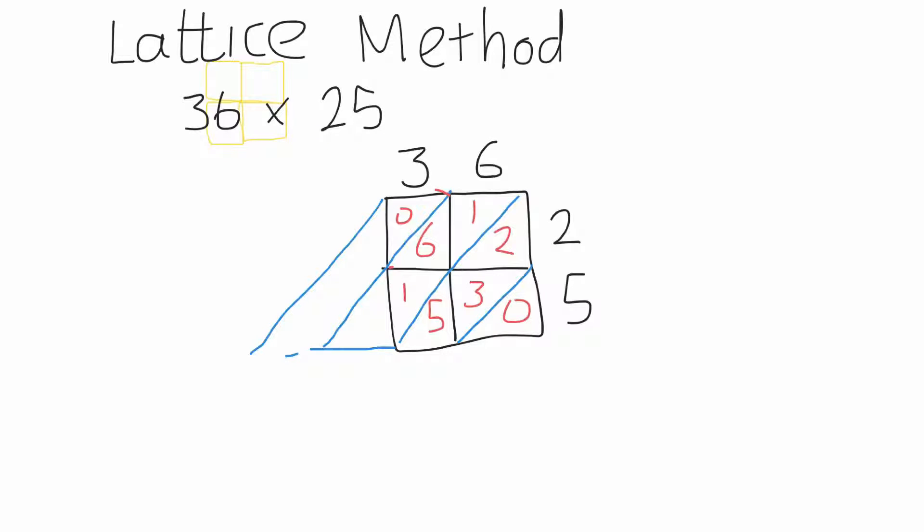And then what we do, we're looking down these diagonals. So the first diagonal down here we've just got 0. Down the next diagonal we've got 10, so 0 carry 1 into the next diagonal. So on this diagonal we've got 7, 8, 9, and on the last diagonal we've got 0, so 900.